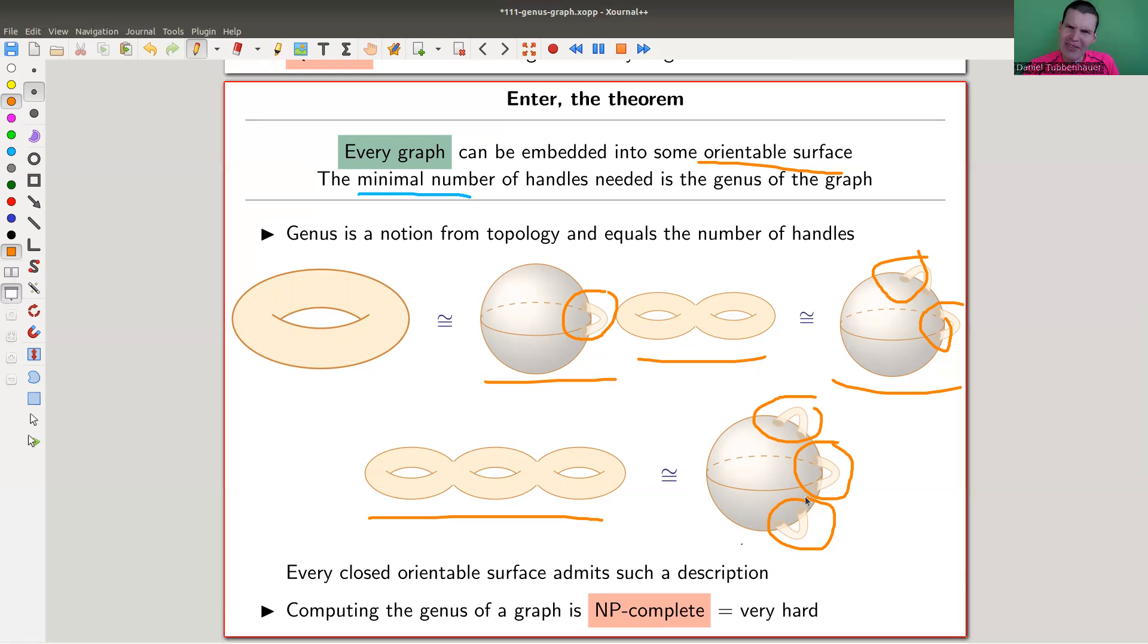In general, computing the genus is really hard. It's an NP-complete problem, which is ridiculously hard.